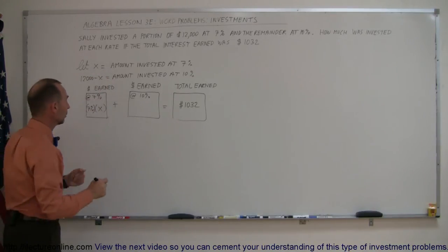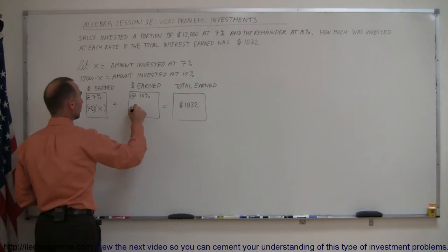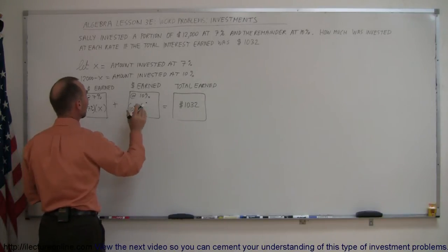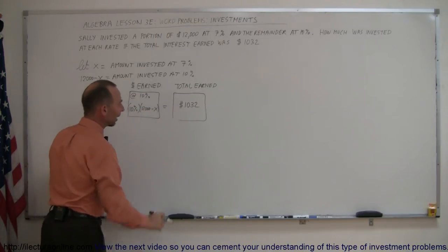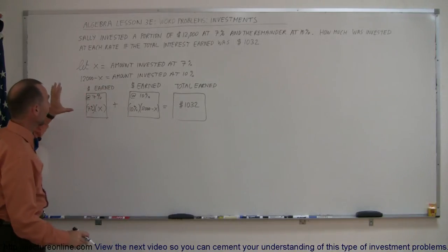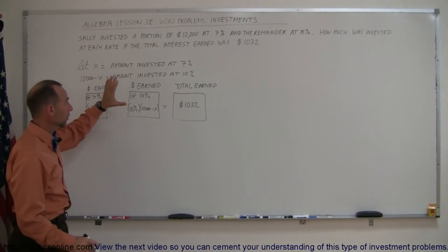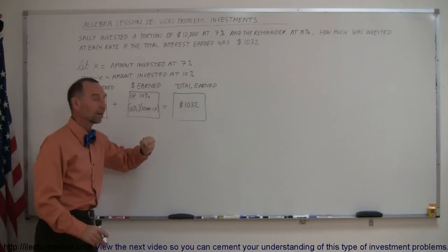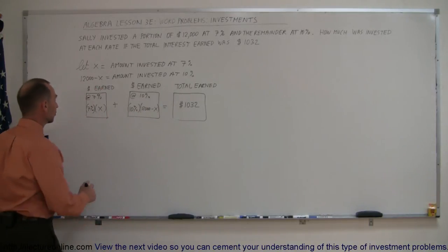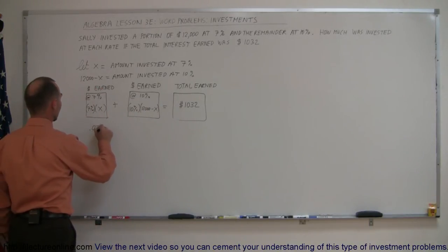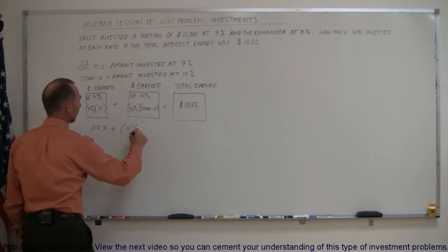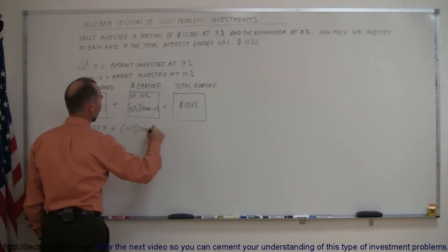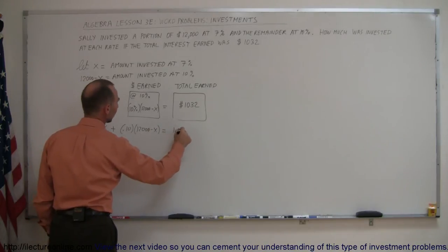And here, we take the rate of return, 10%, and multiply times the amount that was invested at that amount, which is $12,000 minus X. And so, this plus this equals that, in other words, the amount of money earned at 7% plus the amount of money earned at 10% must equal the total amount of money earned. And now, we have our equation, 0.07X plus 0.10 times 12,000 minus X equals 1,032.